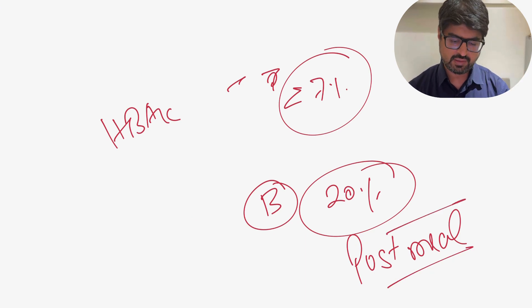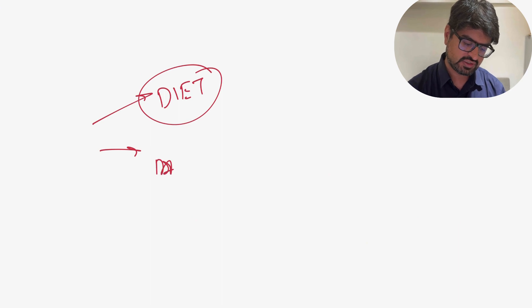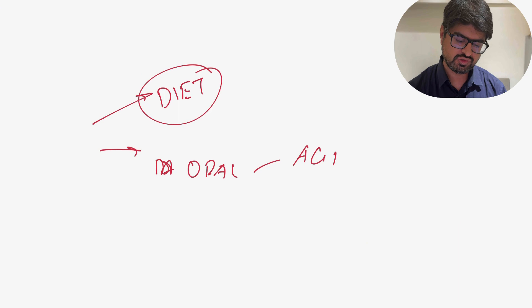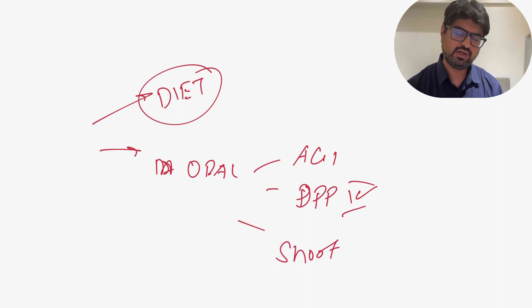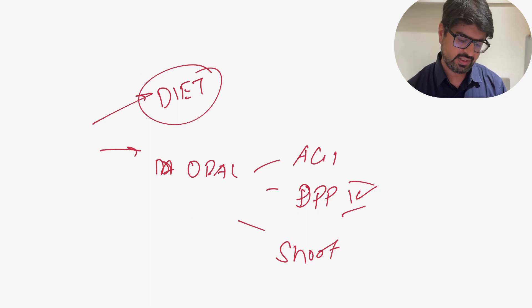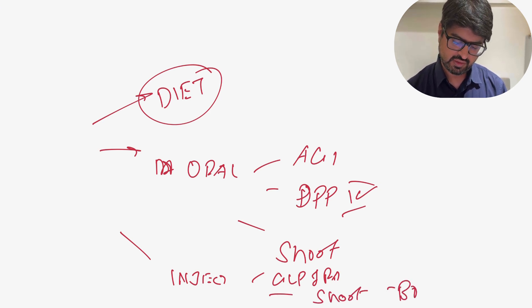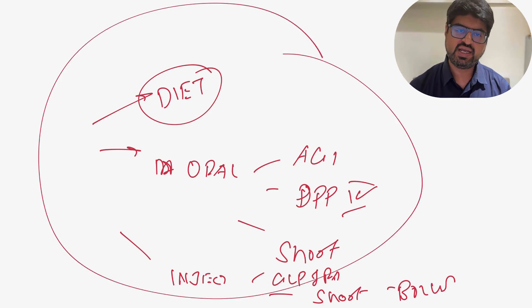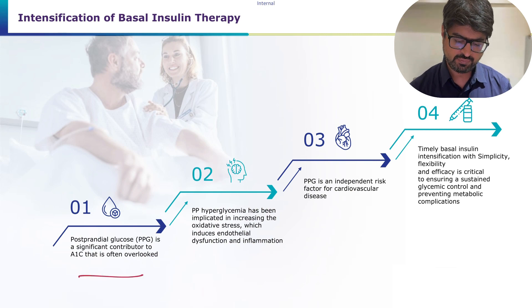To tackle post-meal sugar, options include: dietary improvement, oral medications such as alpha-glucosidase inhibitors like acarbose, DPP-4 inhibitors, short-acting secretagogues like repaglinide or nateglinide, or short-acting sulfonylureas like gliclazide. Injectable options include GLP-1 receptor agonists or adding a short-acting bolus insulin — which is the basal plus approach.